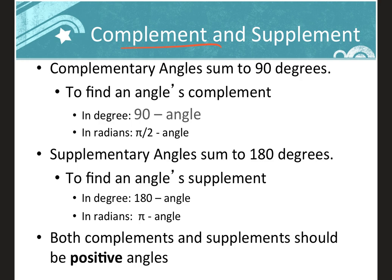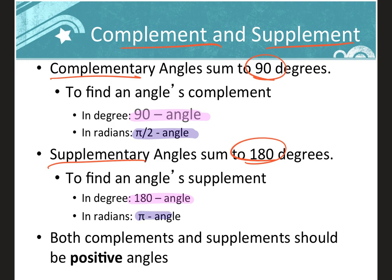Complement and supplement: two complementary angles sum to 90 degrees, and two supplementary angles sum to 180 degrees. In degrees: complement is 90 minus the angle, supplement is 180 minus the angle. In radians: complement is pi over 2 minus the angle, and supplement is pi minus the angle — since 90 degrees converts to pi over 2 and 180 degrees converts to pi.